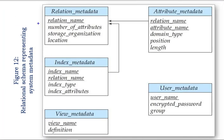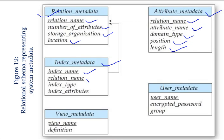We can summarize the contents we have discussed using a diagram with five types of metadata. The first is relational metadata, which holds information like relation name, number of attributes, storage organization, and location. Next is attribute metadata, which holds relation name, attribute name, domain type, position, length, etc. Next is index metadata, which holds index name, relation name, index type, and index attribute. Next is user metadata, which holds user authentication information like username, password, and group. The last one is view metadata, which holds information about the view name and definition. This is all about data dictionary storage.